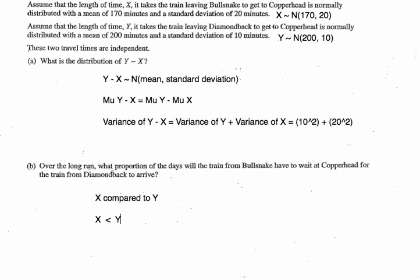This should look similar to a question we've done before. Recall the question involving golf scores comparing Brian and Dave — Brian won when his golf score B was less than D. To solve it, we subtracted D from both sides of the inequality and looked at the random variable B minus D being less than zero. That's the probability we calculated.